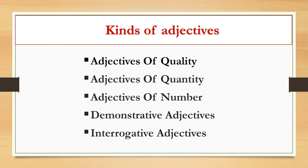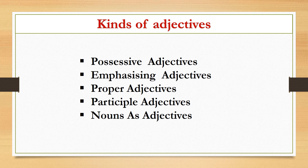Now, we will discuss about kinds of adjectives. What are the different kinds of adjectives? These are adjectives of quality, adjectives of quantity, adjectives of number, demonstrative adjectives, interrogative adjectives, possessive adjectives, emphasizing adjectives, proper adjectives, participle adjectives, nouns as adjectives — and now we are going to discuss them one by one.